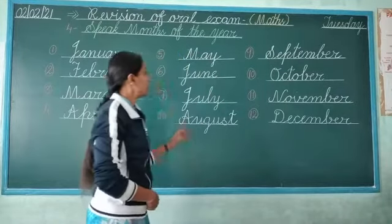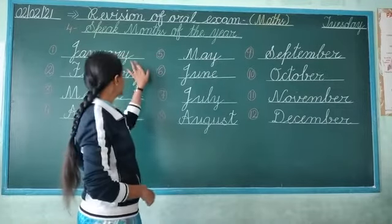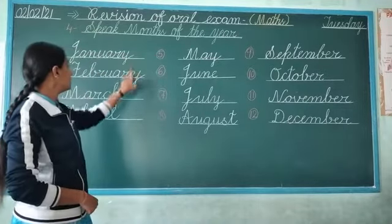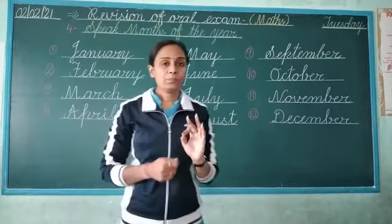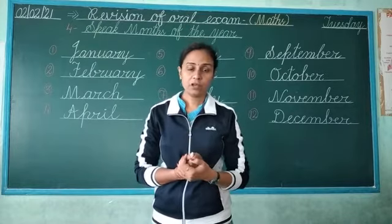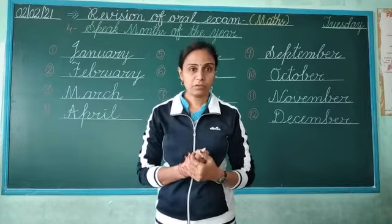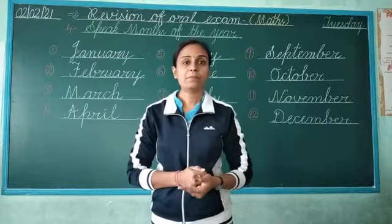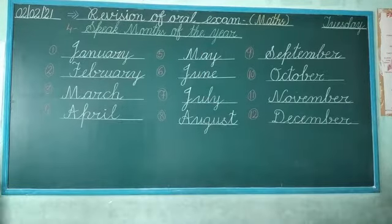You have to speak only the months, not the spelling. Speak only January, February, March — say all 12 month names like this. I hope you all understand. Please watch and listen to this video for your oral exam. Thank you.